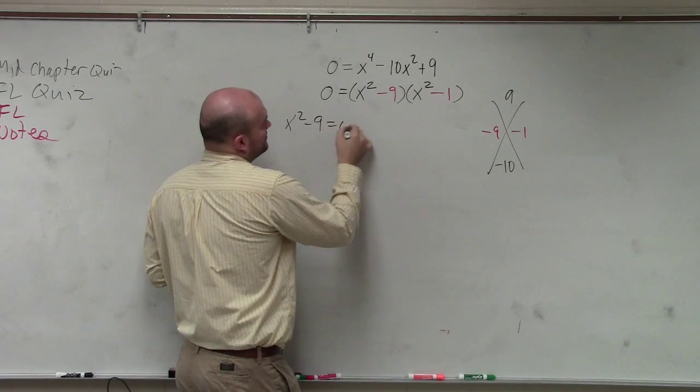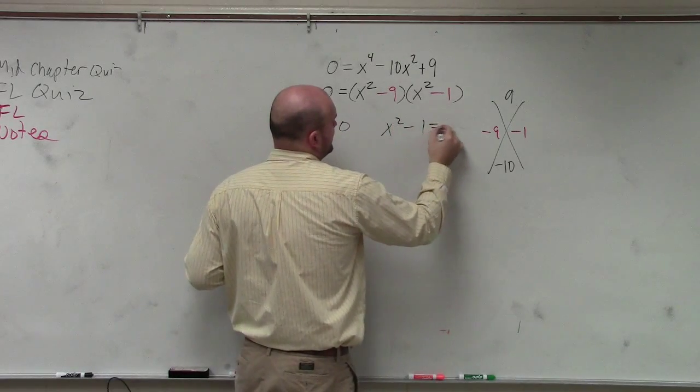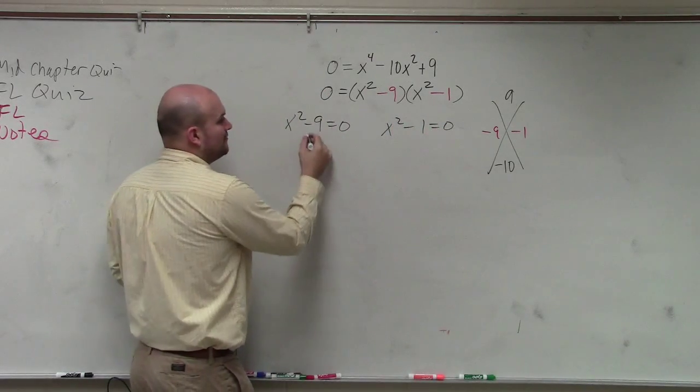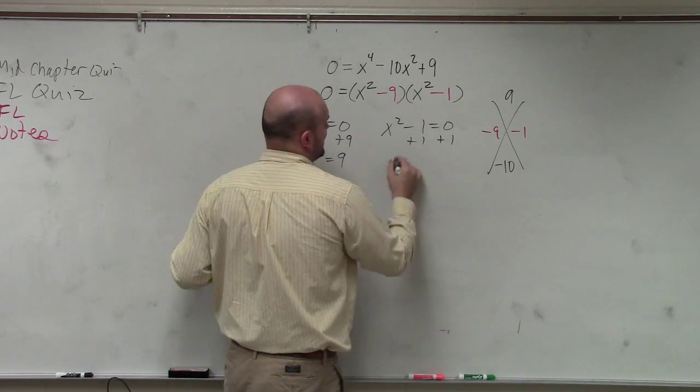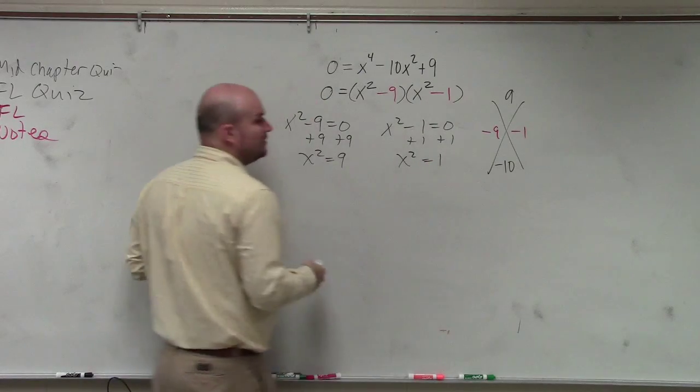So we'd say x squared minus 9 equals 0, and x squared minus 1 equals 0. Well, to solve, you add 9 to both sides. So x squared equals 9. You add 1 to both sides. x squared equals 1.